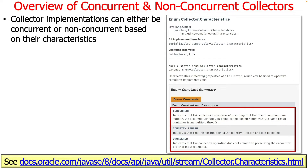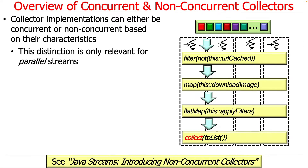Collector implementations can have characteristics that give them properties used by the streams framework to figure out how to run them correctly. There are a number of different characteristics: whether something is unordered or not, whether it's identity-finish or not, and whether it makes the collector concurrent or not. We're going to be focusing primarily on concurrent, although we'll talk about the other characteristics as well.